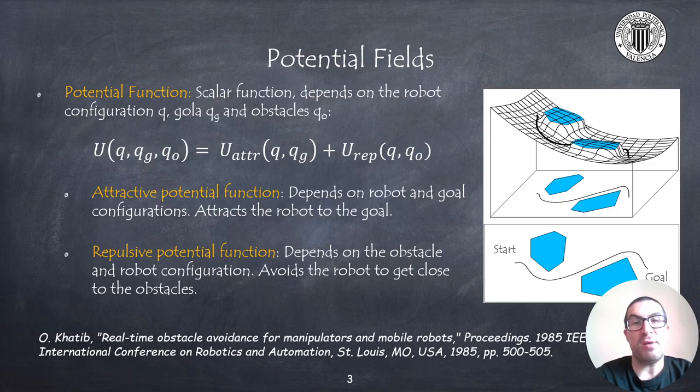A potential function is defined by two functions: the attractive and repulsive ones. The attractive potential function depends on the robot and goal configurations, while the repulsive function depends on the robot and obstacle configurations.